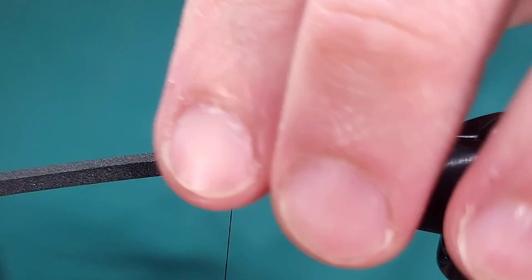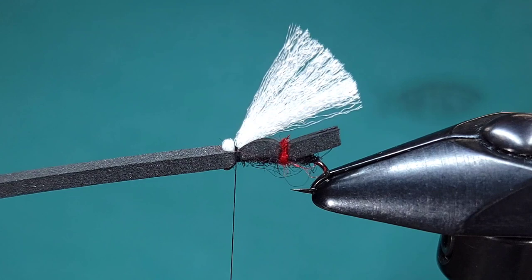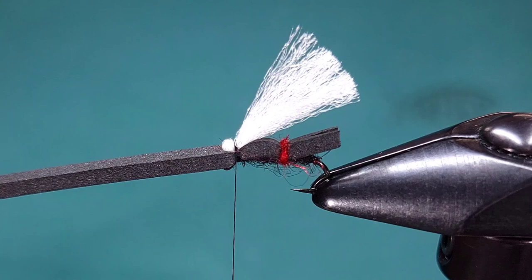If you have trouble securing your poly wing like this where you're folding it over on itself try that little tip or trick. You can just use the tip of your scissors or a bodkin or the end of your whip finish tool. Just something that will allow you to fold that over on itself.